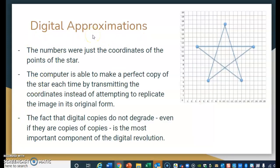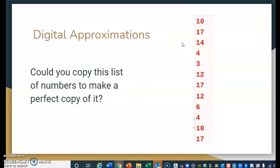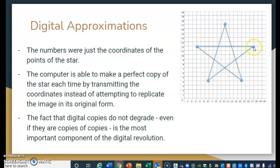What we're talking about is a digital approximation. The numbers on the previous slide were just coordinates — coordinates of the points of the star. What the computer is able to do is make a perfect copy of the star each time by transmitting the coordinates instead of attempting to replicate the image in its original form. Think about if you're trying to hand-draw a star versus being given the coordinates and connecting the dots — you'd make a much better copy by connecting the dots.